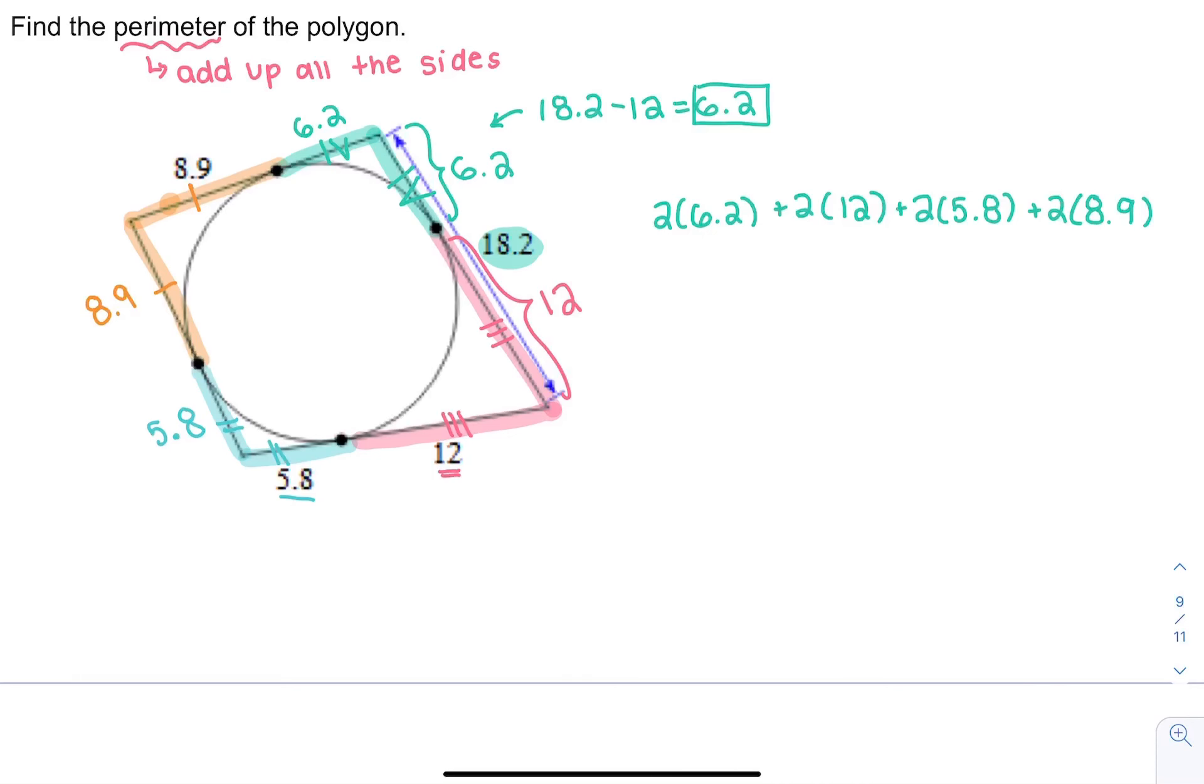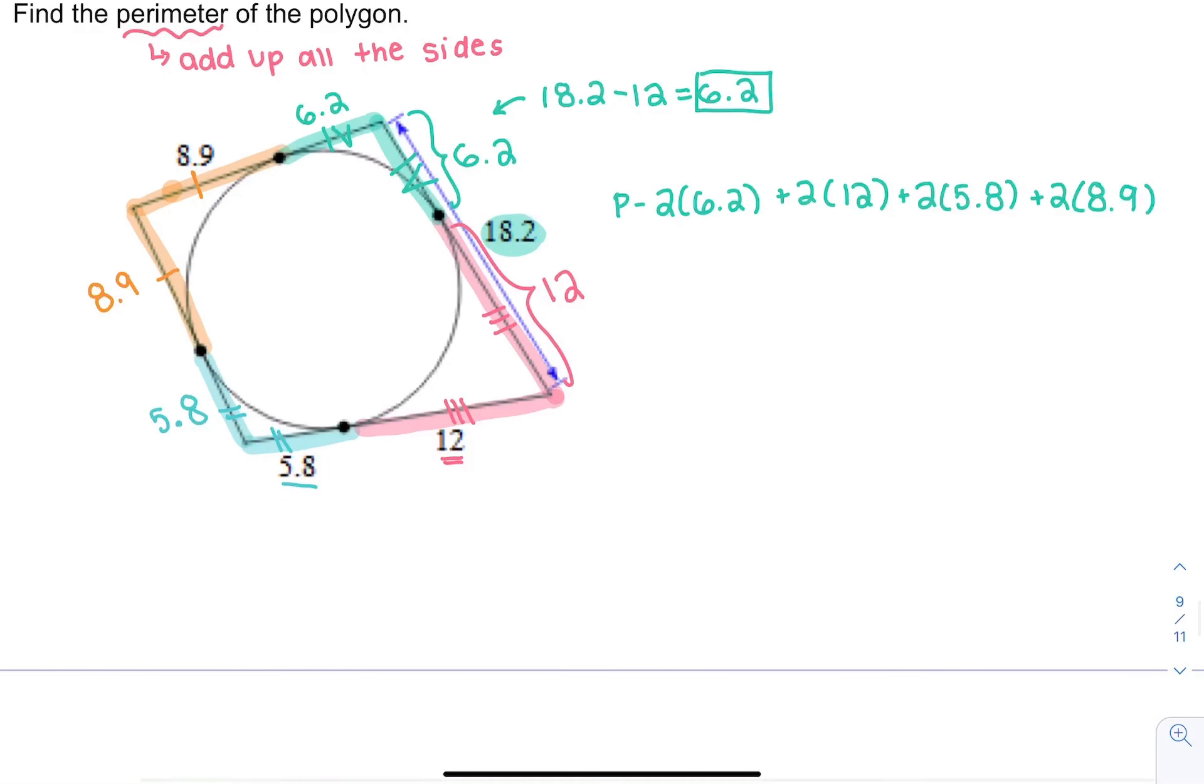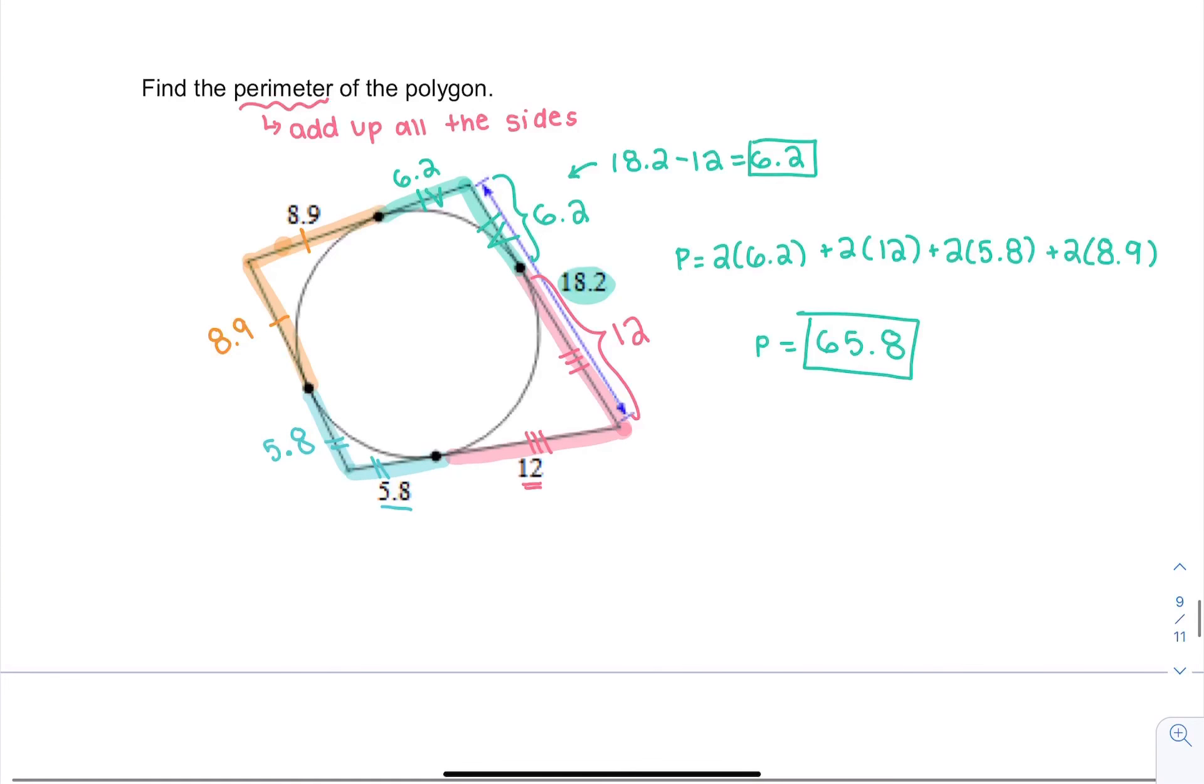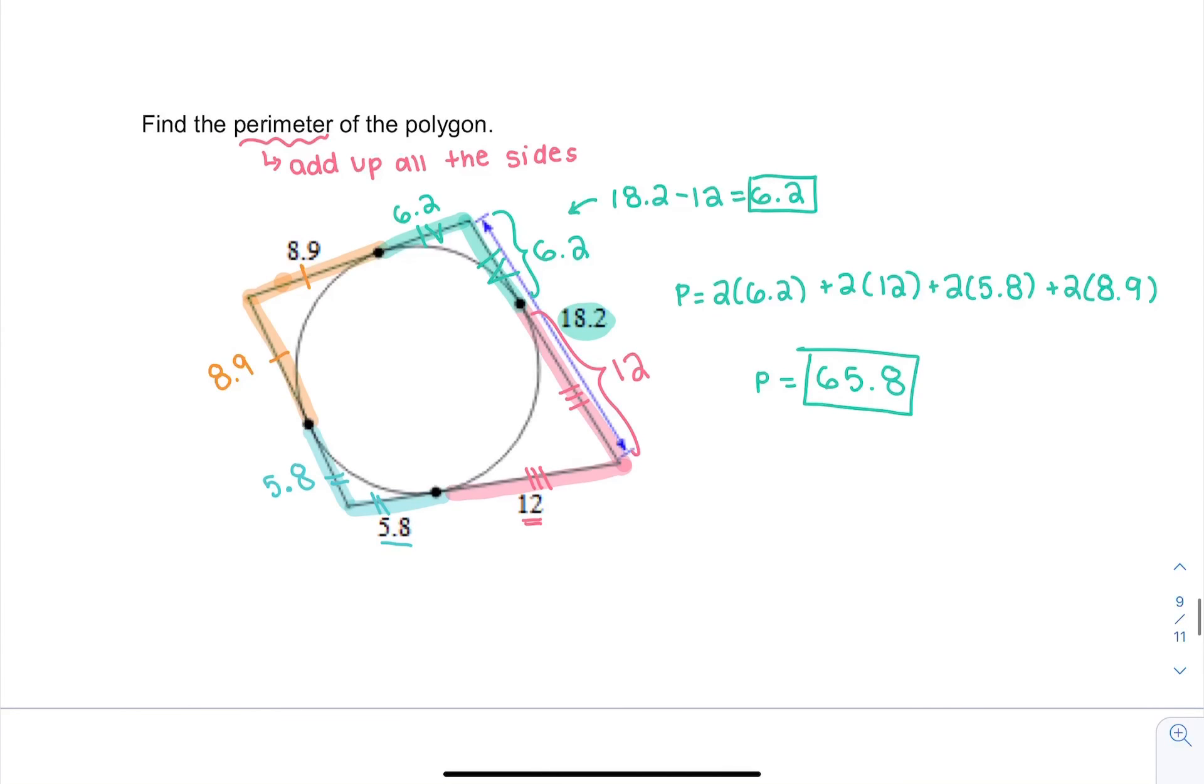Our perimeter is when we added them all up, and we get 65.8. Those are my most favorite problems in geometry, maybe. And that's it for our tangent lines. Thank you.